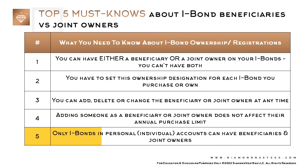Number five: only iBonds in personal — also known as individual — accounts can have beneficiaries and joint owners. And the beneficiary or joint owner must be a person, not a business or trust. Businesses and trusts cannot designate beneficiaries and joint owners on the iBonds they own.